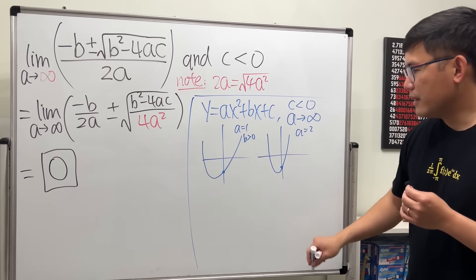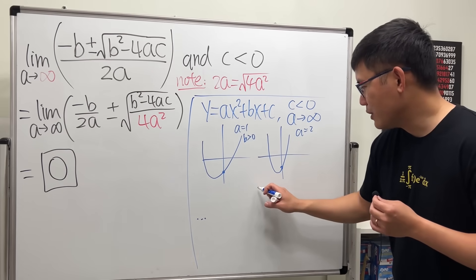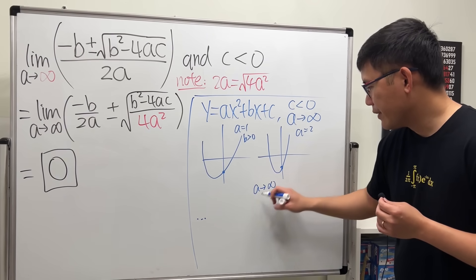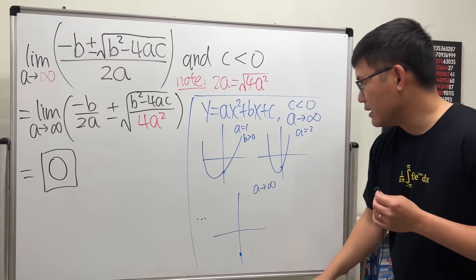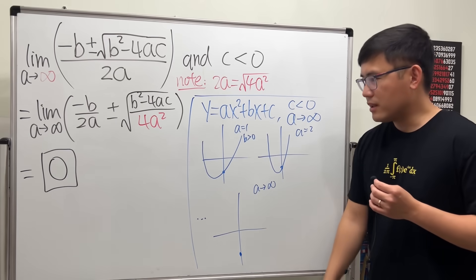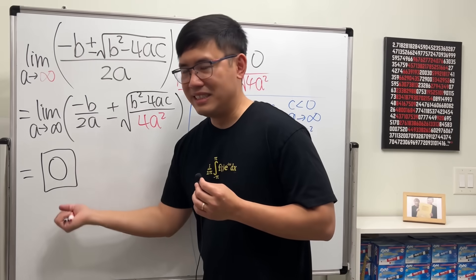And then we are going to have a approaching infinity. So how does it look? Here is our c, the y-intercept.